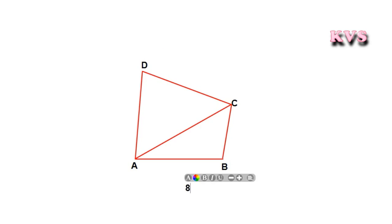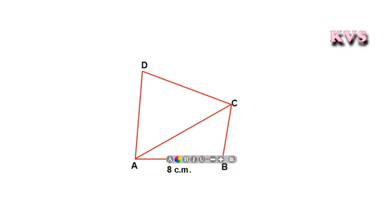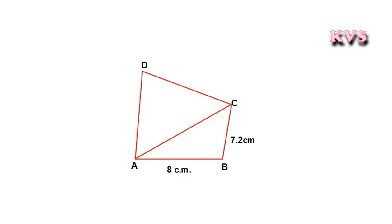Analyze if the given data is sufficient to draw the quadrilateral or not. If sufficient, then proceed further. If not, conclude that the data is not enough to draw the given figure. Then, using the quadrilateral properties, find the missing data and then proceed to construct the quadrilateral.